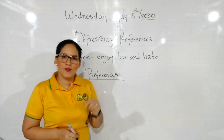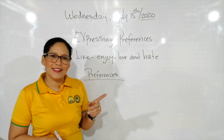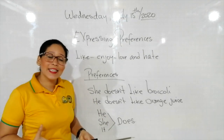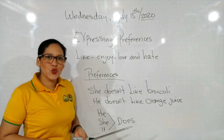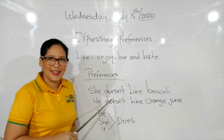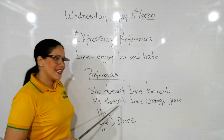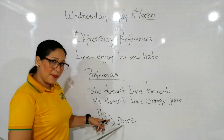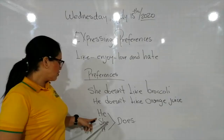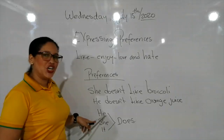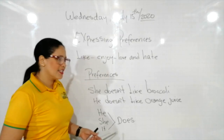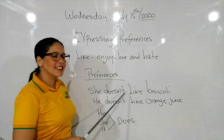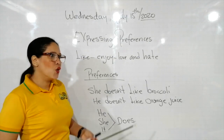Voy a hacer unos ejemplos en forma negativa en tercera persona. Estamos diciendo que a ella algo no le gusta. Trabajamos con el auxiliar does más la negación y el verbo like. Para las terceras personas en forma negativa usamos el auxiliar does. Las terceras personas son he, she, it. She doesn't like broccoli — a ella no le gusta el brócoli.